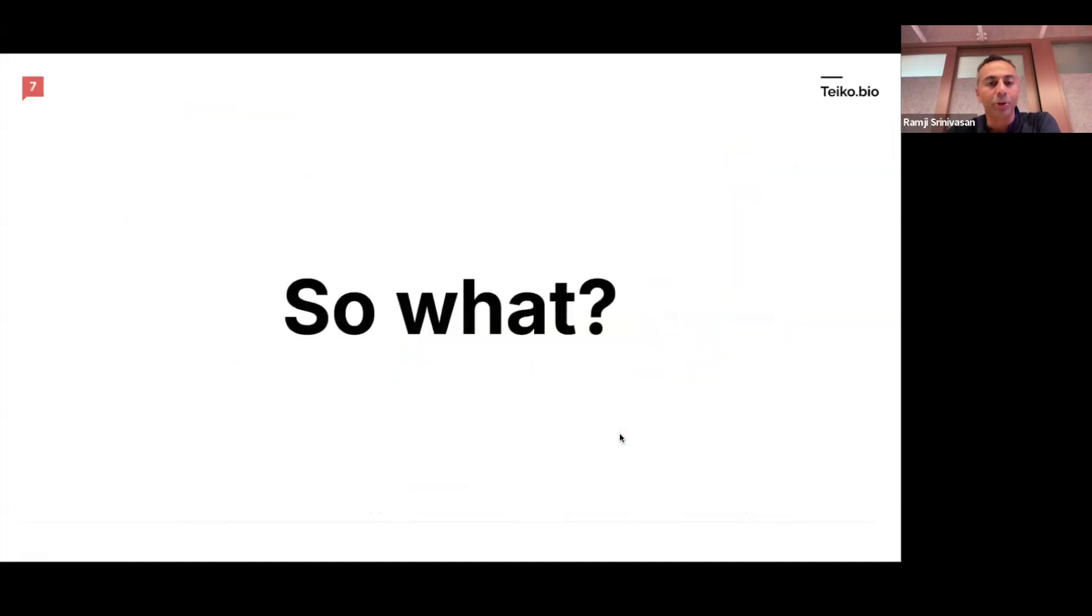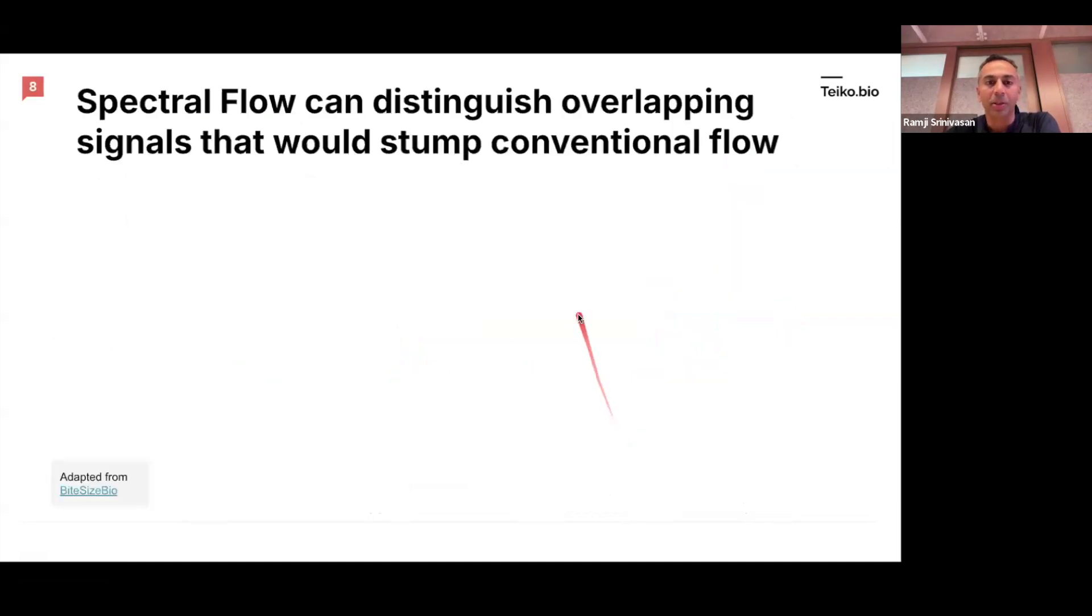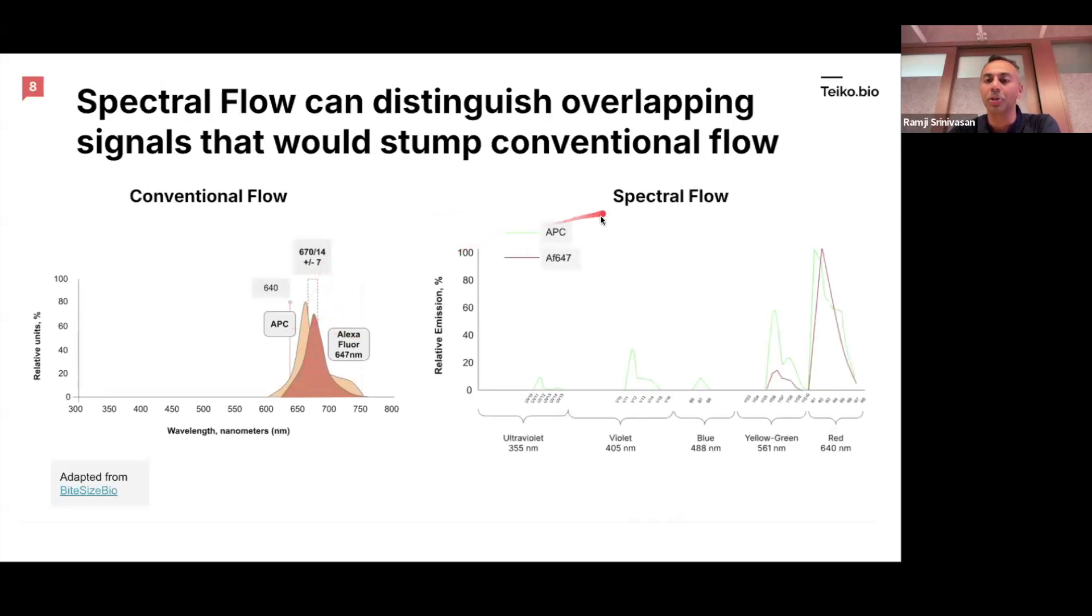So what? Why would a drug developer care about any of this? Well, the basic premise is that spectral flow can distinguish overlapping signals that would stump or confound conventional flow. You remember, this was conventional flow. You had these two overlapping signals. You can't distinguish these parameters or fluorophores, whereas on spectral flow, these are readily distinguishable. And that means you can pack more parameters in a specific experiment or a specific analysis.